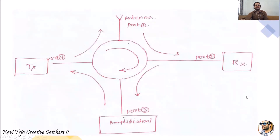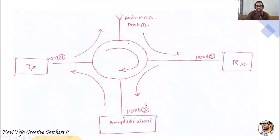Now let's take an example and see how a circulator works in a real-time application. In this four-port circulator, port one is connected to an antenna, port two is a receiver, port three is an amplification unit, and port four is a transmitter. Generally, an antenna is used for both transmission and reception of signals.